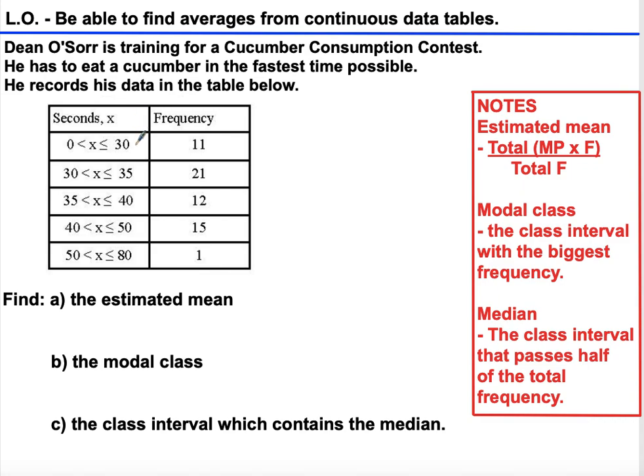This table on the left hand column has seconds in class intervals. We've got greater than zero and less than or equal to 30 seconds, and there were 11 cucumbers that he ate in this time period.